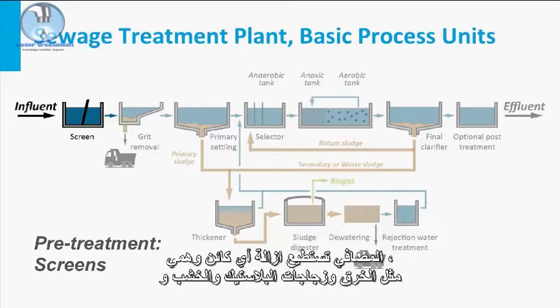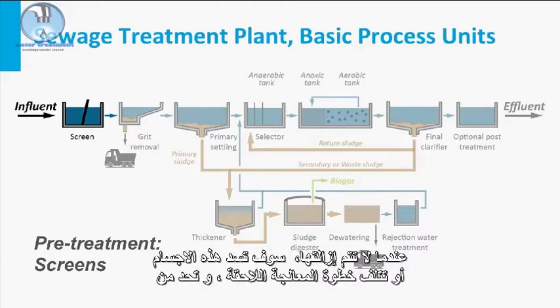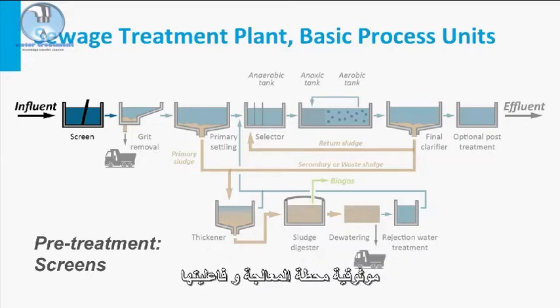The bar screen removes any imaginary object, such as rags, plastic bottles, wood, toy figures, bags, bricks, floating material, etc. When not removed, these objects will clog or damage the subsequent treatment step, reducing the STP's overall reliability and effectiveness.